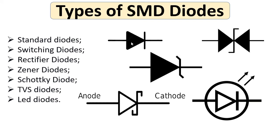For the Zener diode, this is its symbol. Here we have the Schottky diode and its symbol. For the TVS diode, or transient voltage suppressor, this is the symbol for the TVS diode.